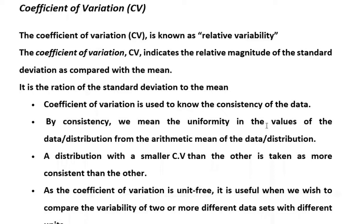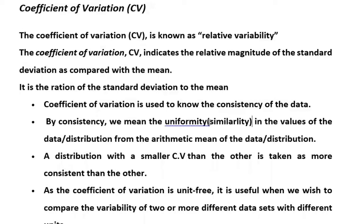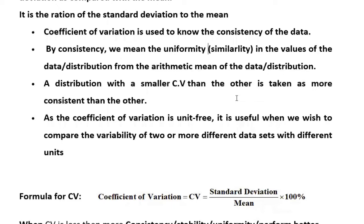What do we understand by consistency? Consistency means the uniformity of the values of the data — how similar the data are, meaning less variation and less difference. Similarity means less variation from the arithmetic mean. When there is a smaller coefficient of variation, the data is usually more consistent — more similar and more uniform.